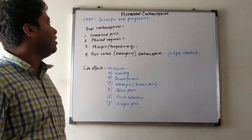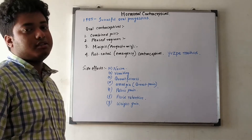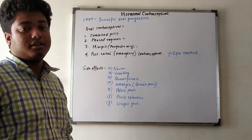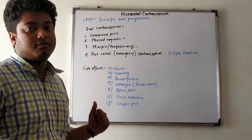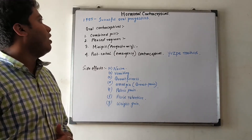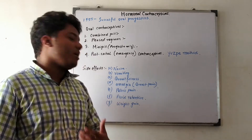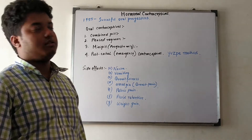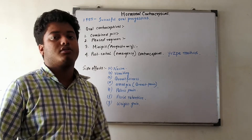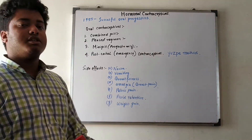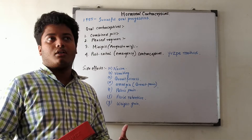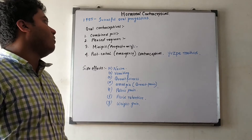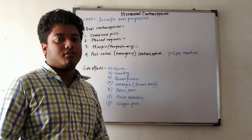The general side effects associated with hormonal contraceptives are nausea and vomiting, which are very common. Apart from that, we have breast fullness and mastalgia — mastalgia is breast pain — which is very much associated with these hormonal contraceptives. Then we have pelvic pain, fluid retention, and weight gain. All these side effects are generally associated with continuous use of hormonal contraceptives, so we should reduce taking these pills as much as possible.